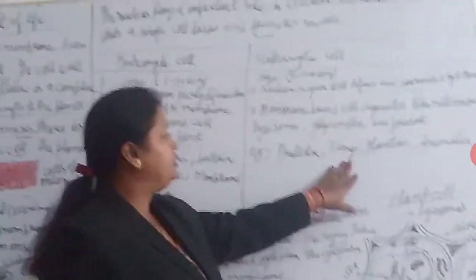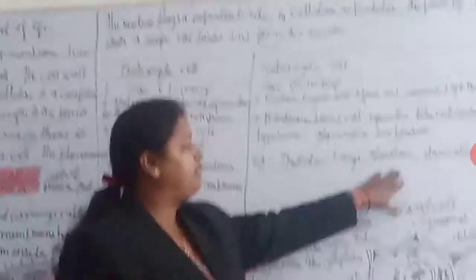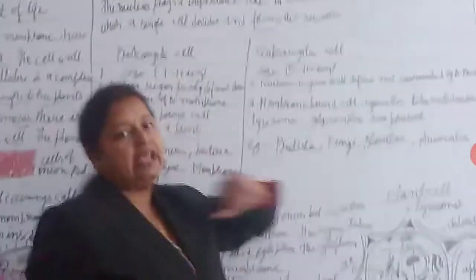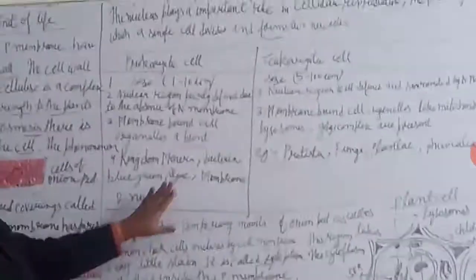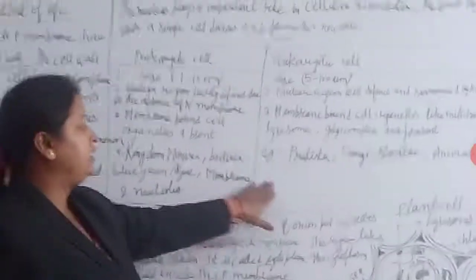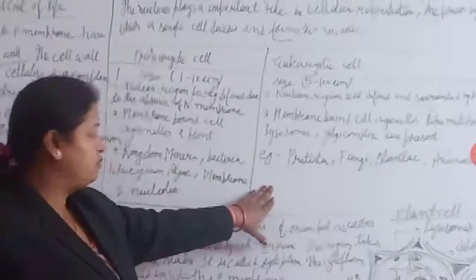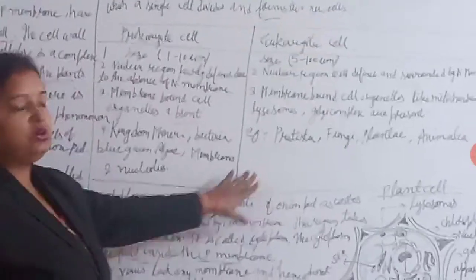In eukaryotic cells, you can see examples such as protists, plants, and animals. That is the main difference between prokaryotic and eukaryotic cells. That is very important — you should learn it.